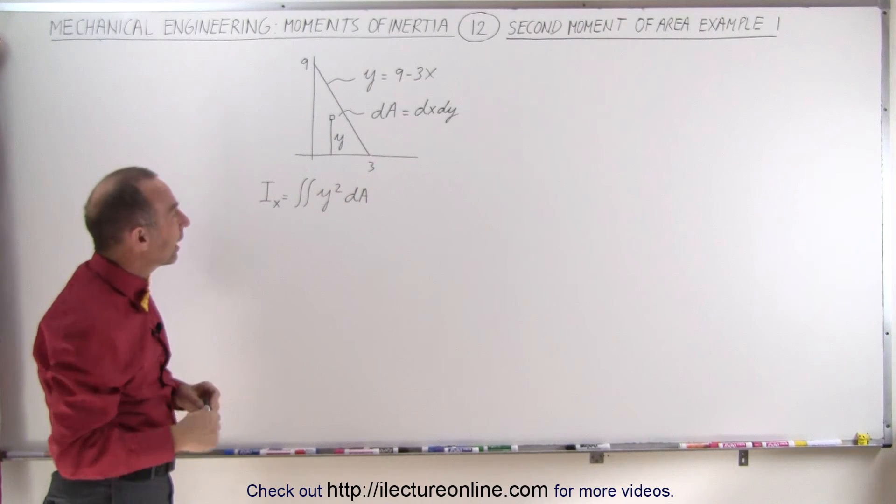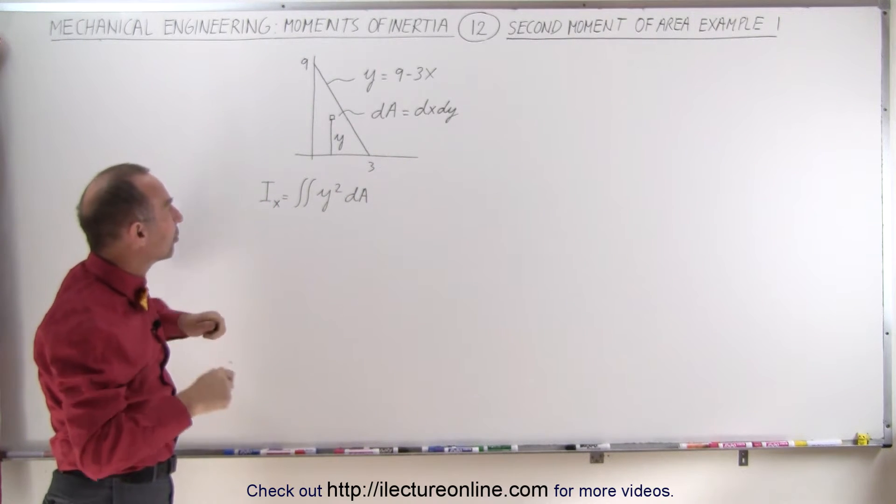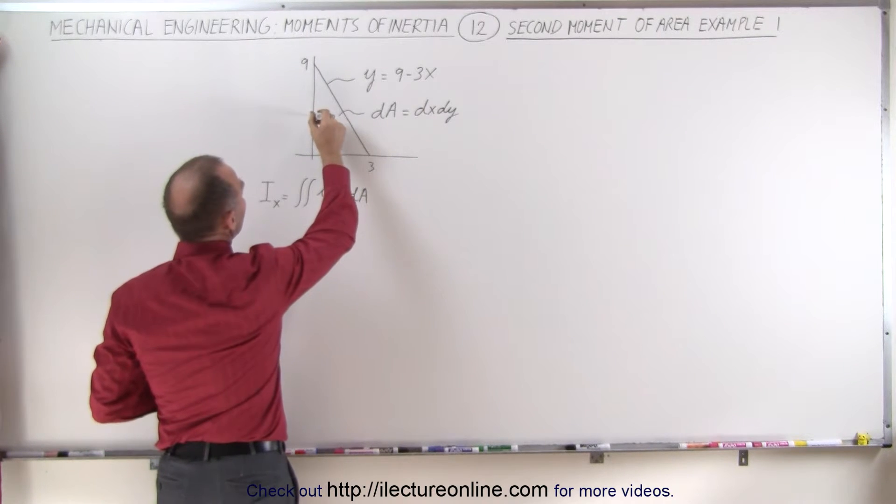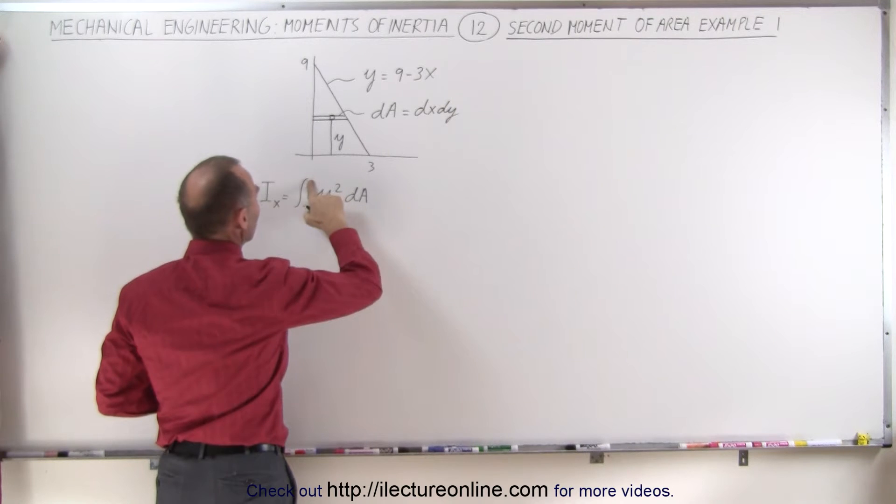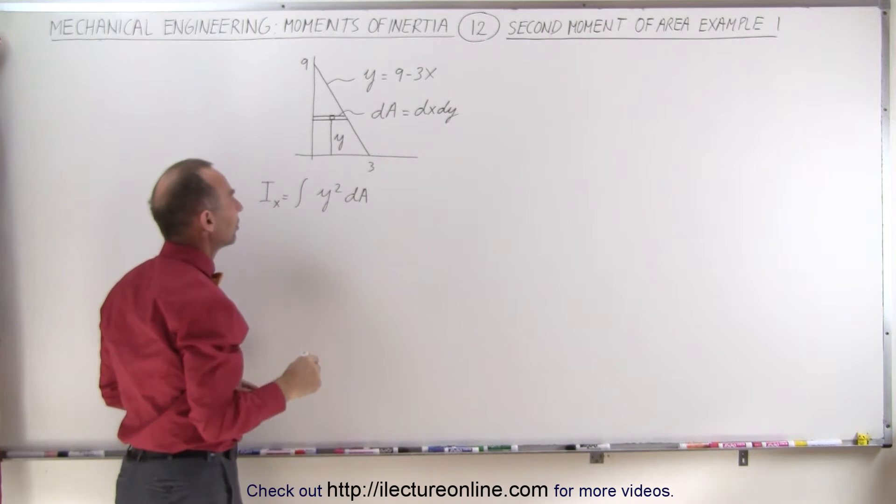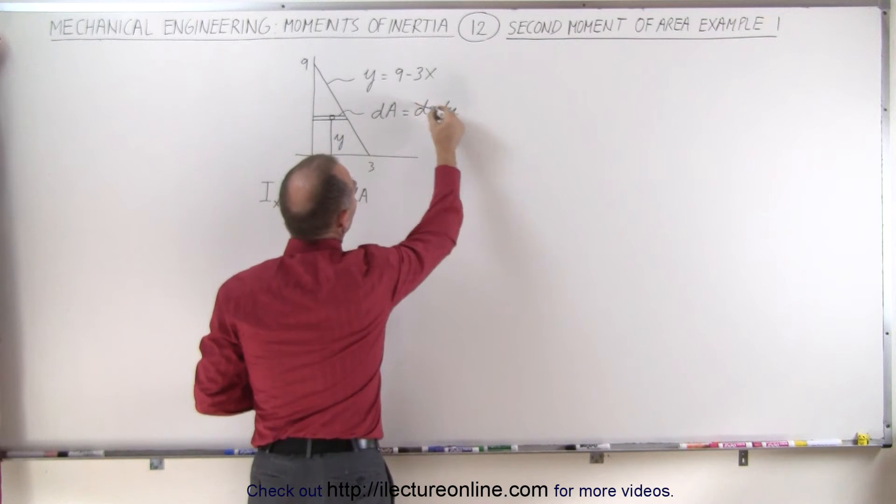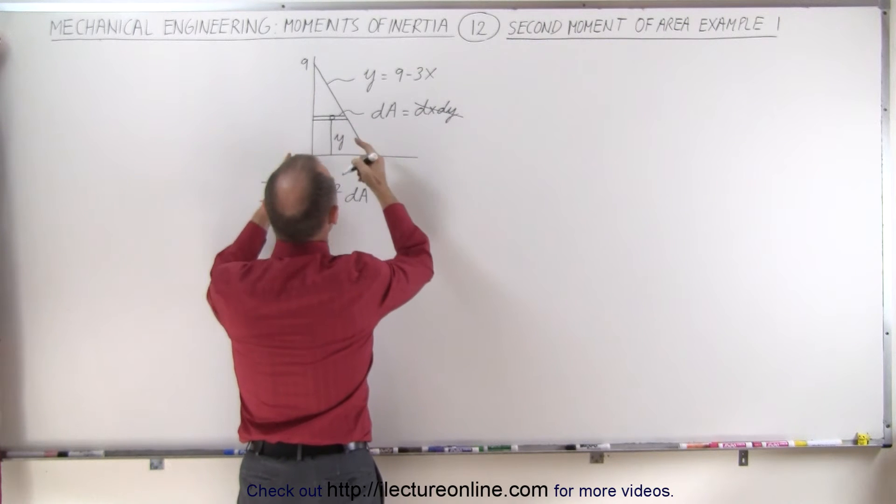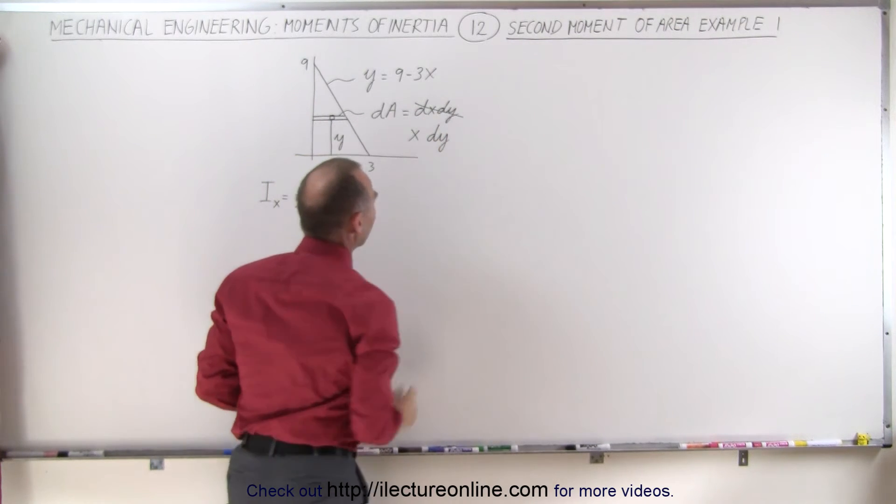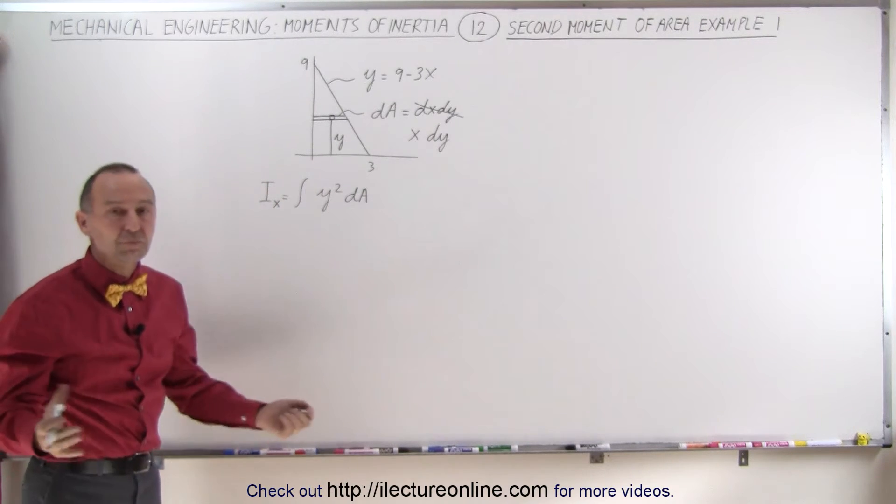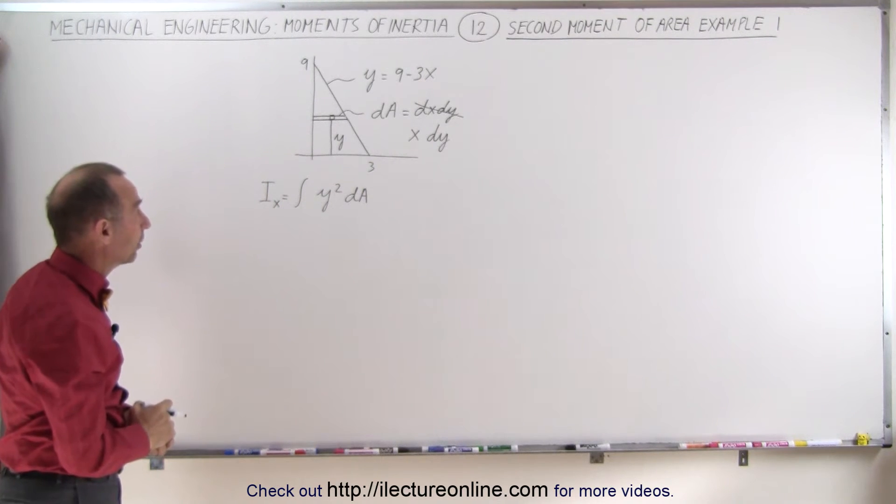But in this particular case we can probably make it a little bit easier by simply calling dA this area element right here. I think we can get away with that. That means we simply just need a single integral and dA then simply becomes the width which is x times the height which is dy. So sometimes you can shortcut the method a little bit like that.